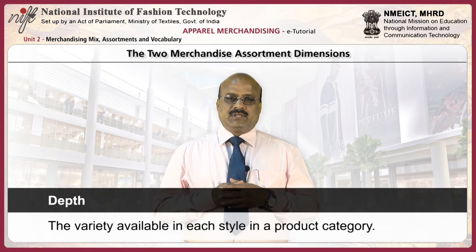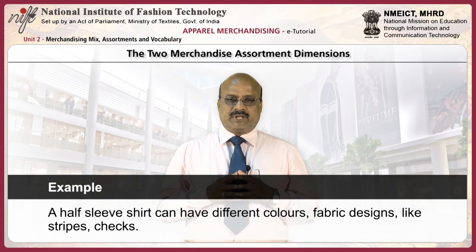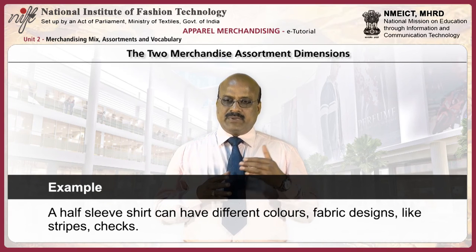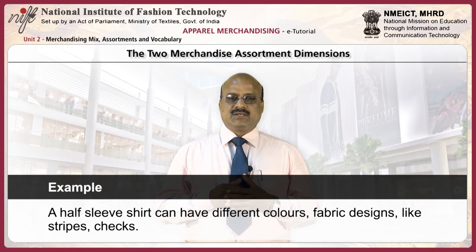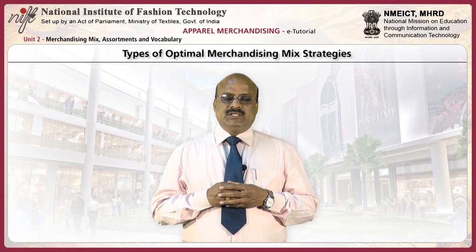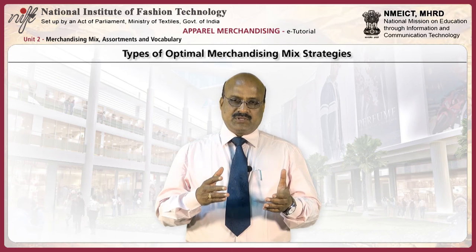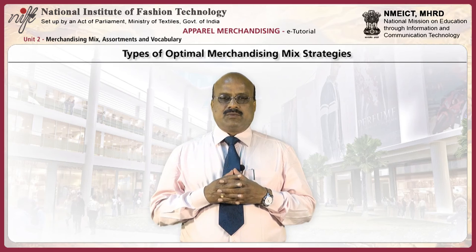Depth is the variety available in each style of the product category. For example, in a half-sleeve shirt, how many different colors, fabric designs like stripes, checks, and sizes are available. Retail stores may follow narrow and deep assortments or broad and shallow assortments.